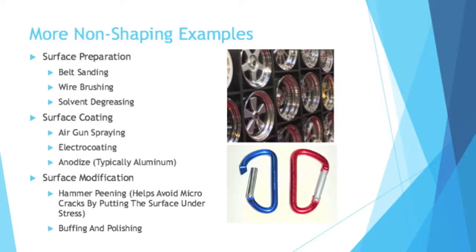Surface modification is different from preparation and coating. One example is hammer peening, which helps avoid micro-cracks by putting the surface under slight stress — you're changing the microstructure of the surface, not just coating it. Buffing and polishing also reduce the variance in the height of the surface: at the micro level your surface is uneven, but buffing and polishing make it smoother.